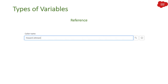Then we have Reference. Just as you have a reference field on native forms like Incident, Change, or Problem, if you want to add a similar field on your service catalog item form, you select the Reference variable and refer to a table so users can look up and select a record.